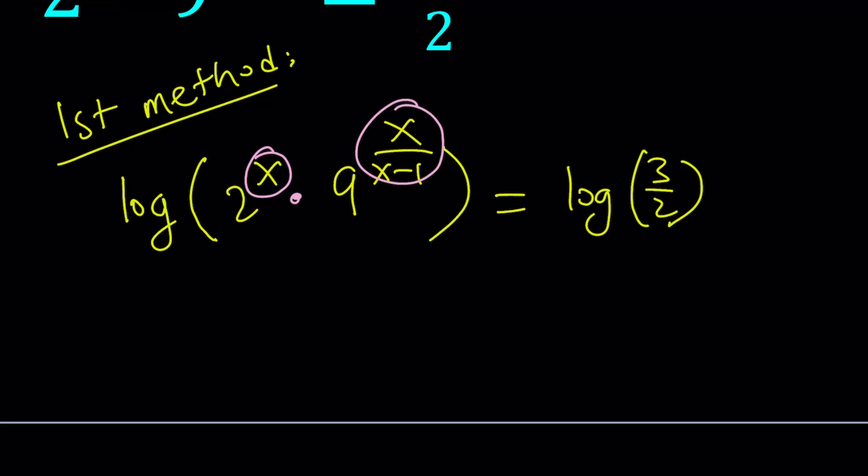Now we have this exponent and that exponent. We can bring them down. But first we have to take care of the log of a product. And what is the formula for that? Log a b is log a plus log b.